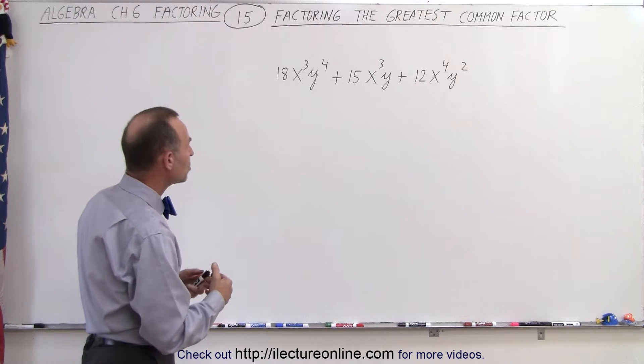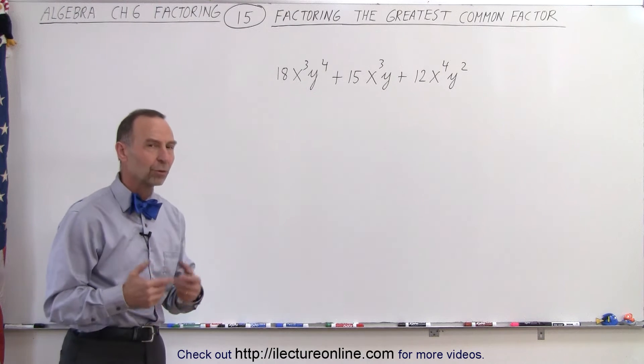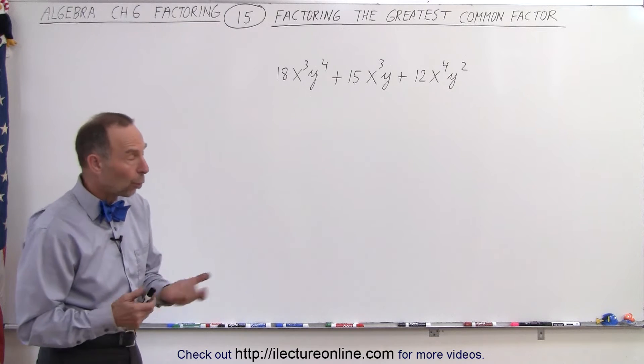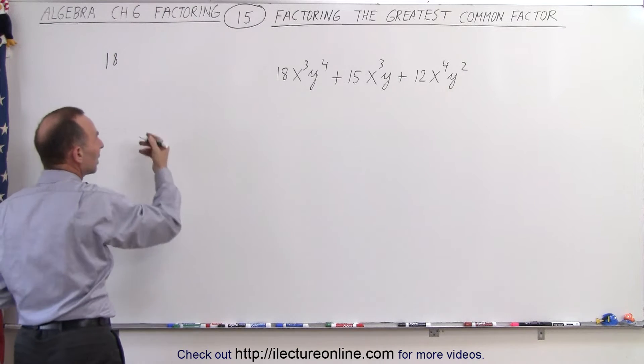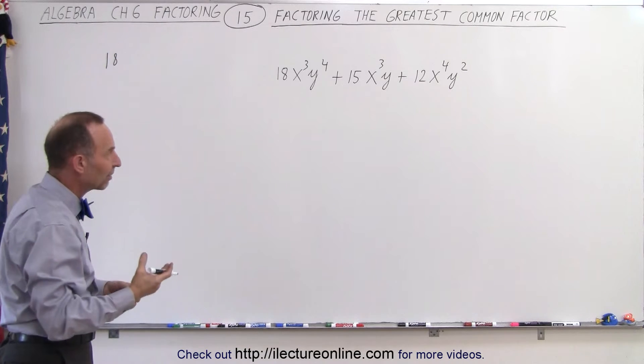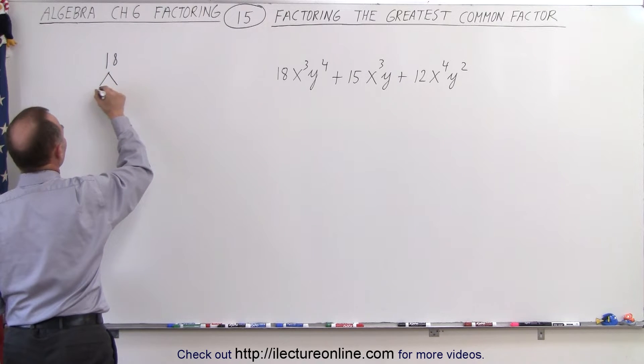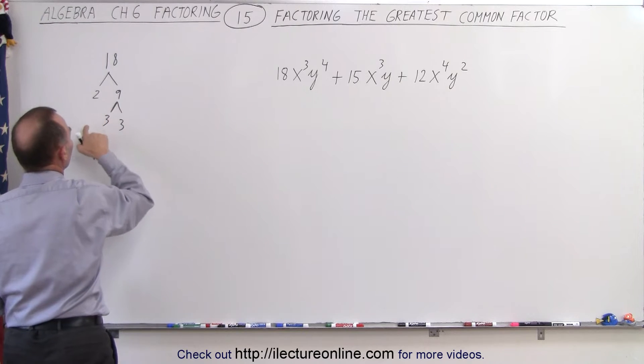So let's start with the numerical coefficients. We have the numbers 18, 15, and 12. So what's the greatest common factor? We can do it by trial and error, or we can simply take each of the numbers and see what they can be written as. In other words, we can write them as the product of their smallest factors. So 18 can be divided by 2, that gives us 9, and 9 can be divided by 3, that gives us 3. So 18 can be written as 2 times 3 times 3.